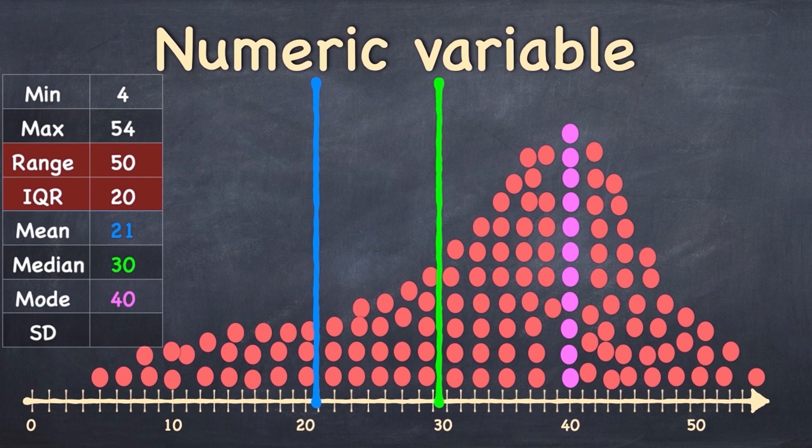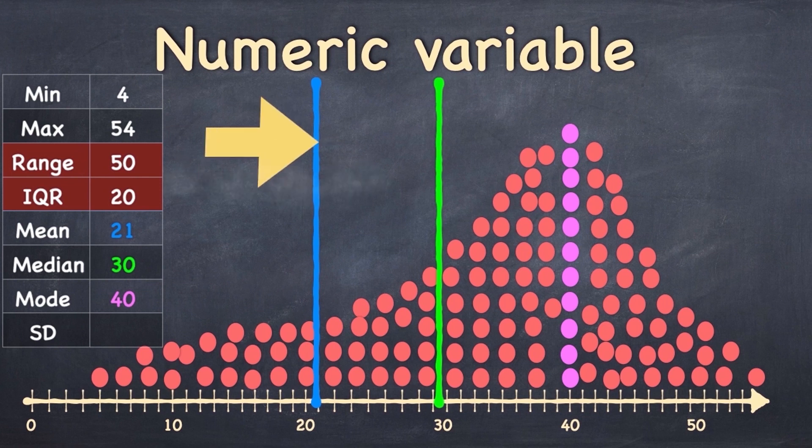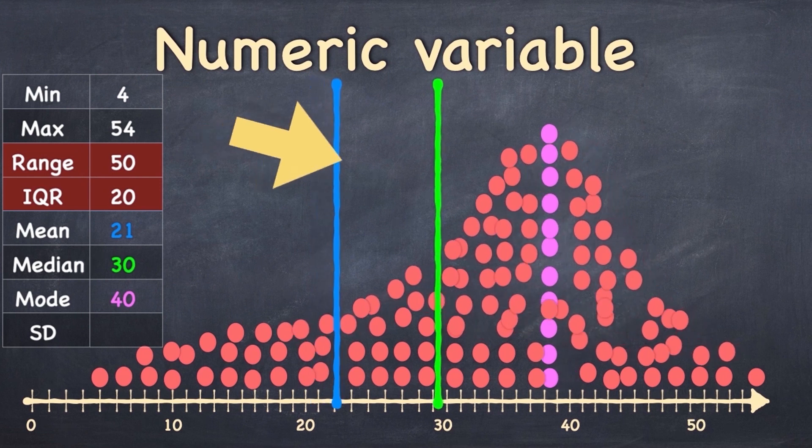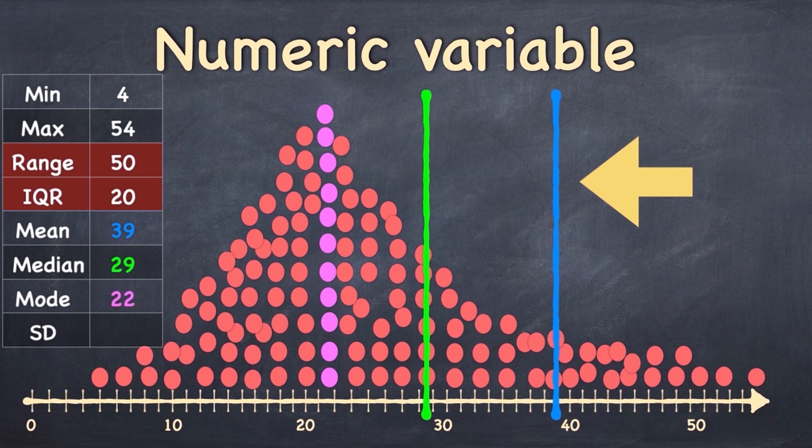However, if the distribution of values has got a long tail to one side, the left side in this case, and we say this is left skewed, then suddenly the mean or the average is disproportionately affected by the outliers and these extreme values. And similarly, if you have a right skewed distribution, and remember the tail is to the right so we say that it's right skewed, the mean is way too far to the right, so it's not a good measure of centrality.